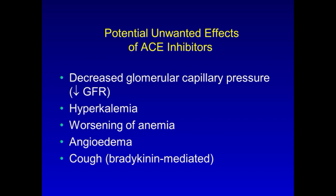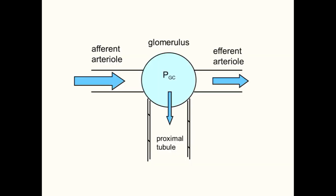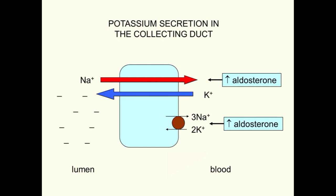On the other hand, the same properties of ACE inhibitors that make them such effective therapeutic agents can also result in unwanted, and sometimes harmful, side effects, and we will go over several of them which are listed here. For example, the same decrease in glomerular capillary hydrostatic pressure that protects intraglomerular vessels and reduces proteinuria can be enough to significantly reduce GFR, which can be bad, especially in patients whose GFR is already low because of chronic kidney disease. Another potentially dangerous side effect of ACE inhibitors is hyperkalemia, because when angiotensin-2 synthesis is prevented, so is aldosterone synthesis, which then impairs potassium uptake into renal tubular cells and secretion through potassium channels into the collecting tubule to be excreted in the urine.